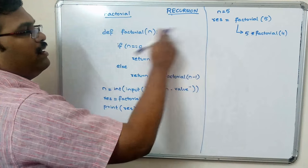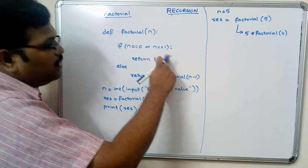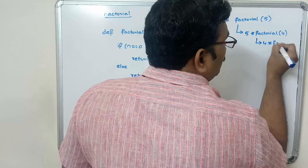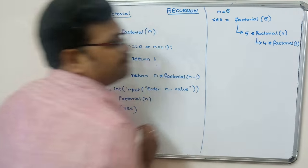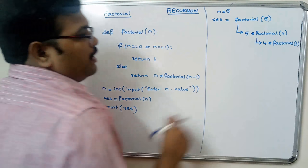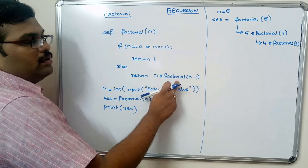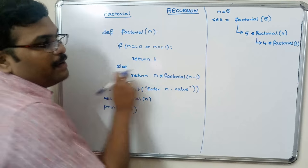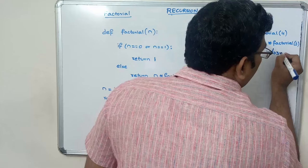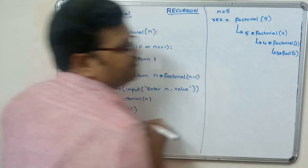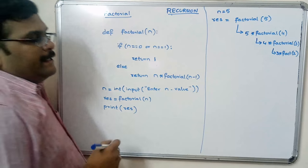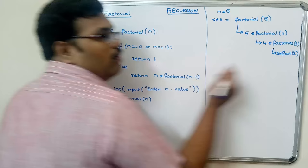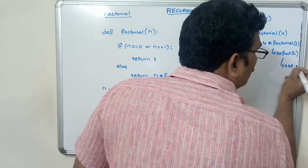Again factorial(4) is called. Is 4 equal to zero? Is 4 equal to one? Again false, so it returns 4 into factorial(3). Next, factorial(3) is called — the function calling itself. 3 is not zero, not one, condition is false, so it returns 3 into factorial(2). Again, 2 is not zero, not one, so it returns 2 into factorial(1).